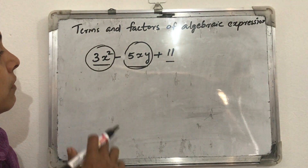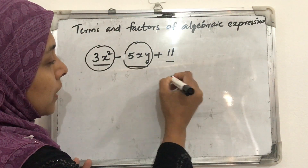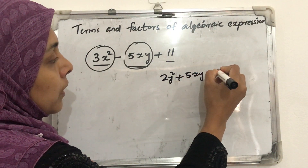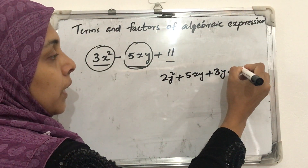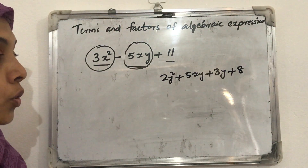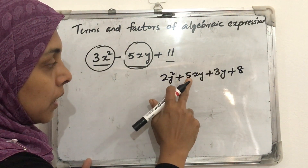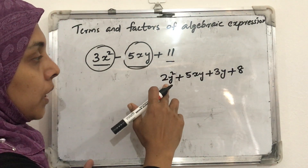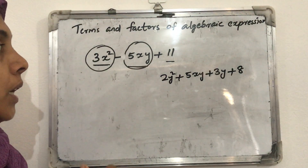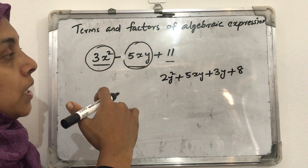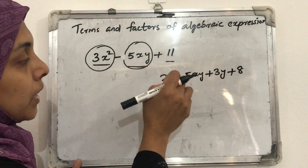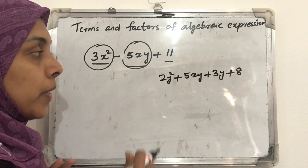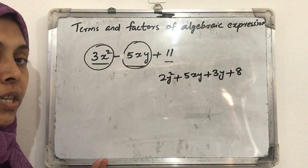Now let's look at another example. Another expression: 2y² plus 5xy plus 3y plus 8. This is also another algebraic expression. How many terms are here? 1, 2, 3, 4 — each term separated by an addition sign. So here 4 terms are there. These are called the terms of an algebraic expression — combined with addition or subtraction, those parts are called terms.